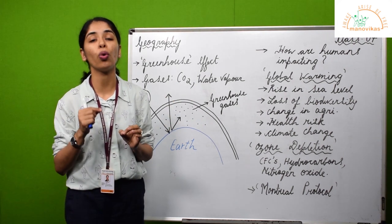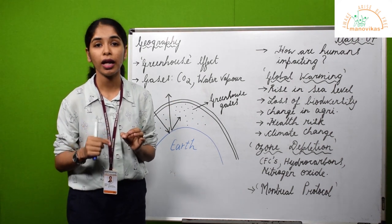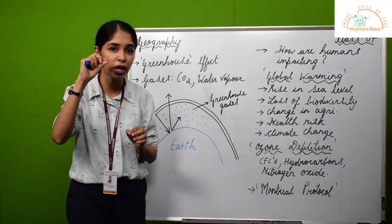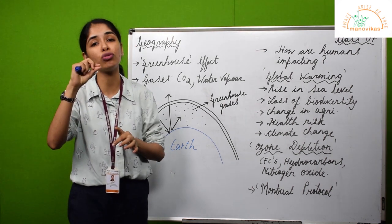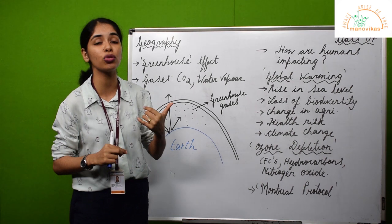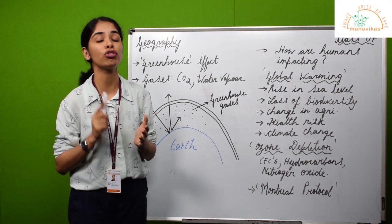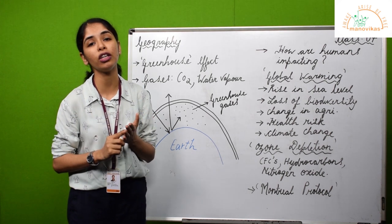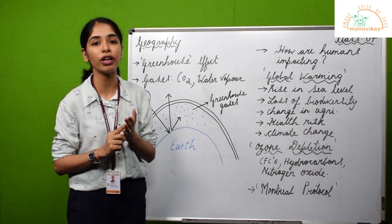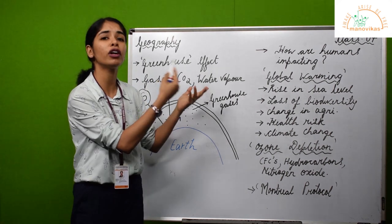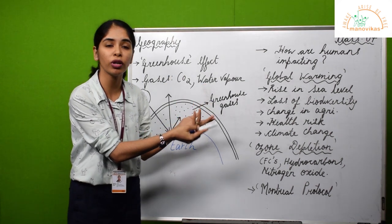You will be surprised to know that the thickness of the ozone layer in the atmosphere is only three millimeters. That's like holding two coins together, and the thickness of those two coins is actually the thickness of the ozone layer in the atmosphere. But it carries out the most important role of shielding the earth from the harmful UV rays of the sun.